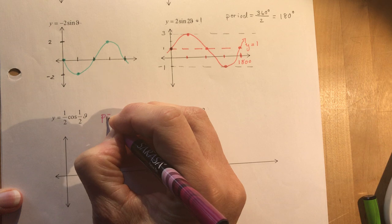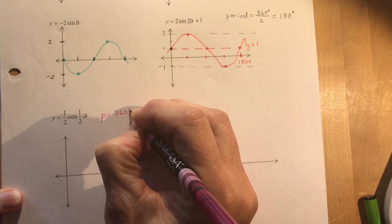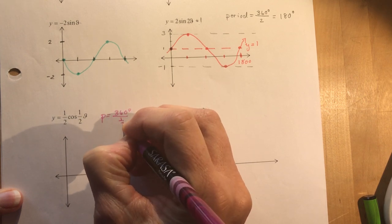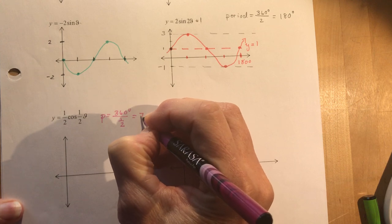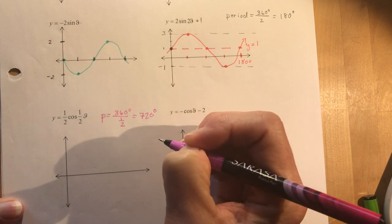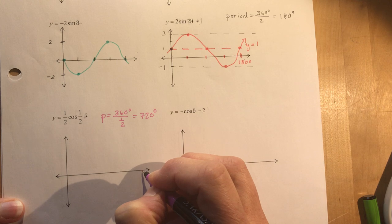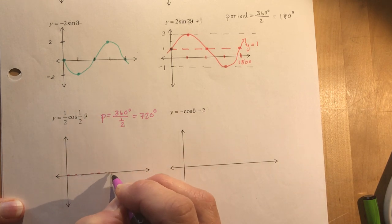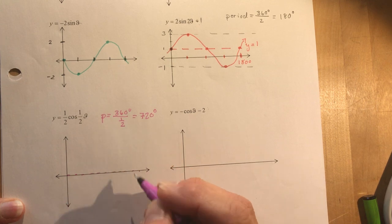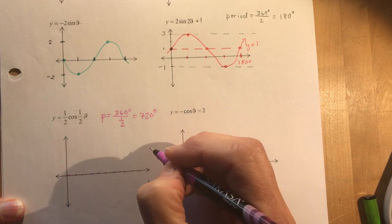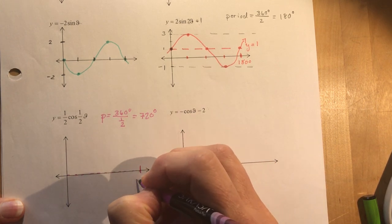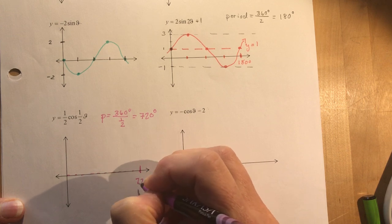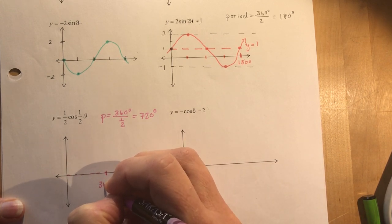Period equals 360 degrees divided by one half, and that would be times two, so 720 degrees. So I don't have any vertical shift, my axis is still going to be right here, right where it was, no vertical shift up or down. So I'm going to make this 720 degrees here.